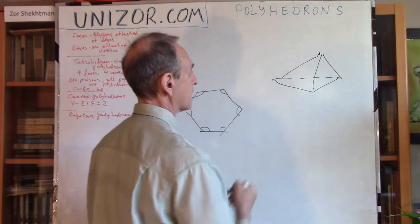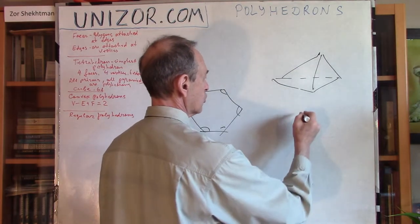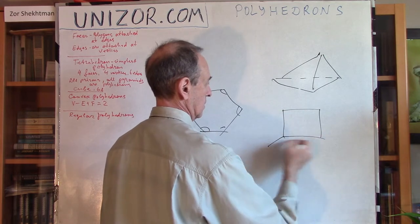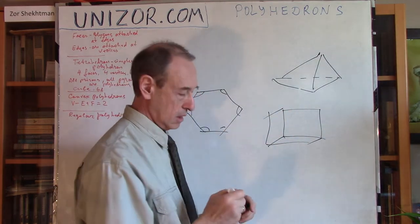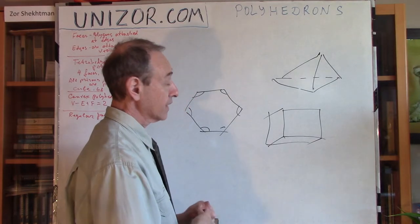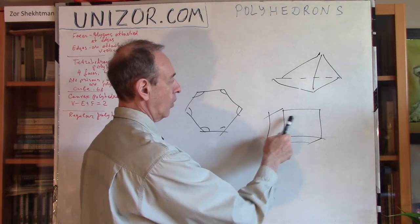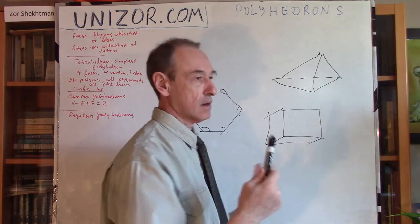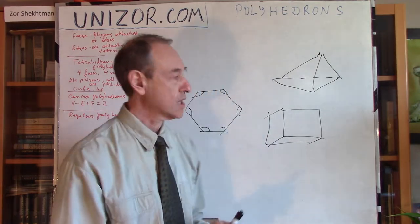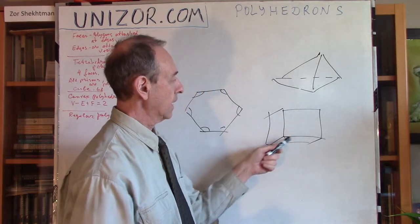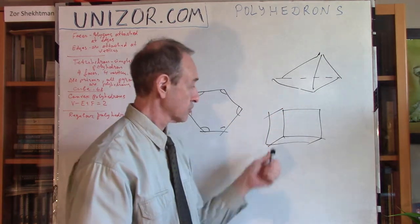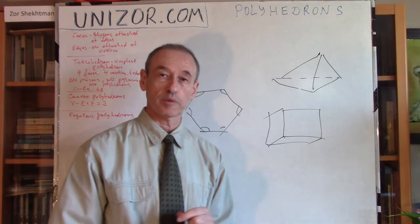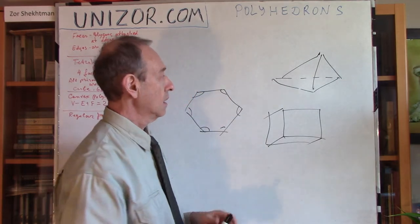Now, the next regular is a cube, obviously. This is also a regular polygon, a polyhedron, because all faces are squares congruent to each other, and all angles between different planes are actually 90 degrees in this case. They're all perpendicular to each other.